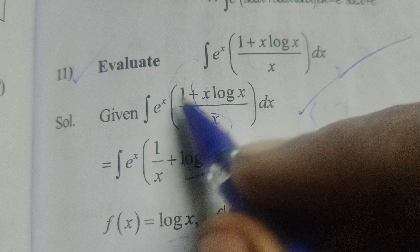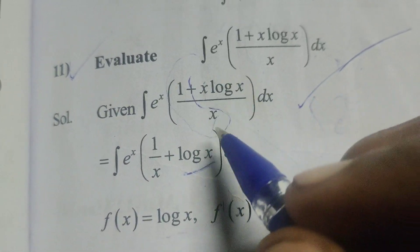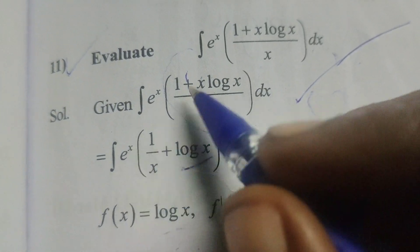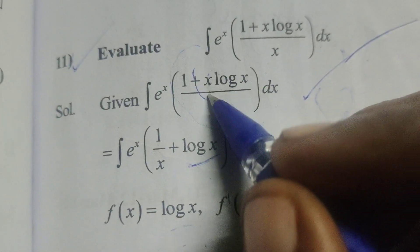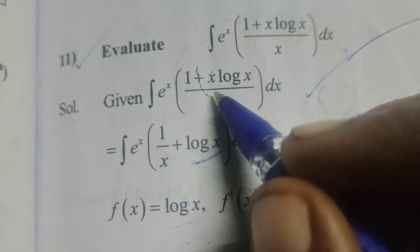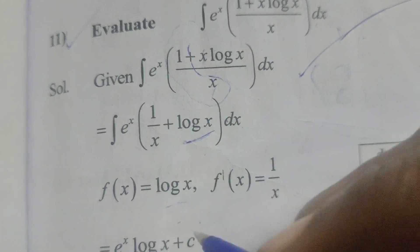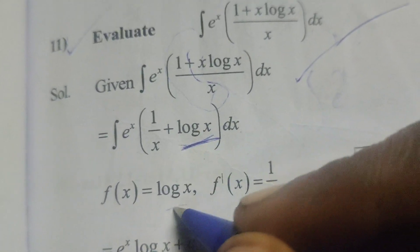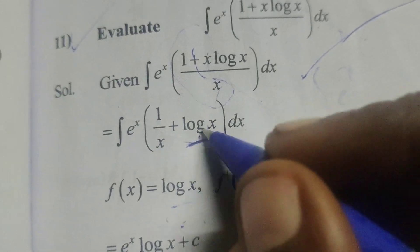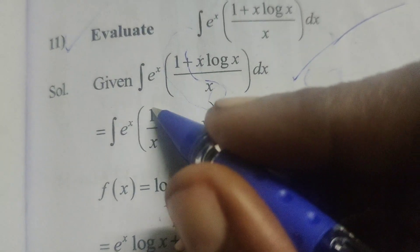Now here e power x into, write 1 by x. x log x by x means x x gets cancelled plus log x into dx. Here suppose we consider log x means f of x. Then go to differentiation of log x means 1 by x.